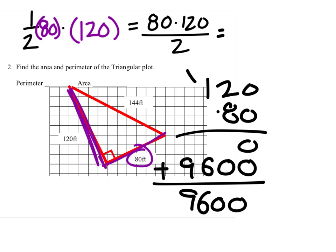When we add these, we just get the same thing: 9,600, and that's our numerator here, but we're going to divide it by 2.